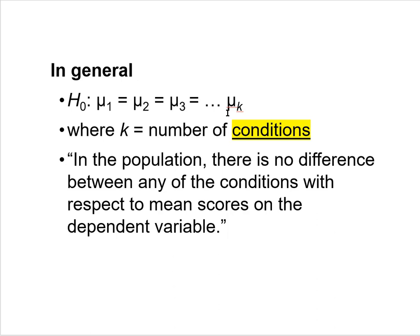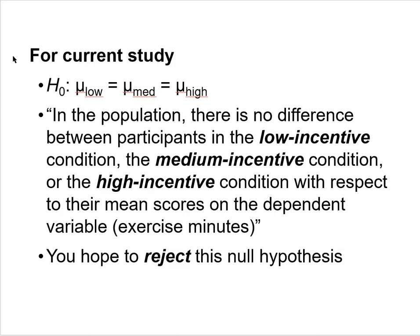In general, the omnibus statistical null hypothesis is stated symbolically as: μ₁ = μ₂ = μ₃ = μₖ, where μ (the Greek letter mu) is the symbol for a population mean, and k represents the number of conditions in the investigation. In general, you're saying there is no difference between any of the conditions in the population with respect to their mean scores on the dependent variable.